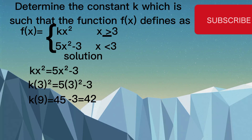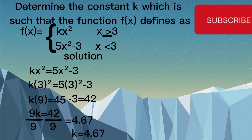So we have 9k = 42. To find k, divide both sides by 9: k = 42/9. On dividing, the answer is k ≈ 4.67. So the constant k is 4.67.